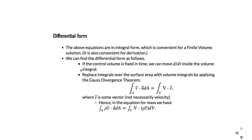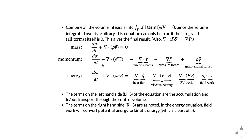Once we combine all the volume integrals, we get an integral over volume of all terms equals zero. Since this must hold for an arbitrary volume, the integrand itself must be zero. This gives the differential form of the governing equations. We also note that del dot rho*delta (pressure times the unit tensor) can be written as grad P. Applying that, we get the mass, momentum, and energy equations in the commonly presented differential form.